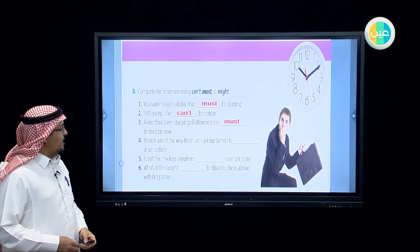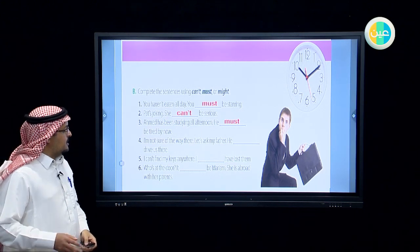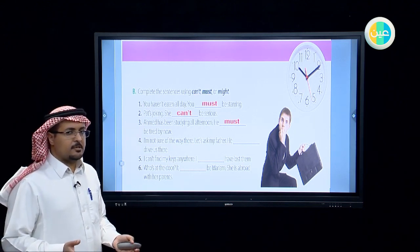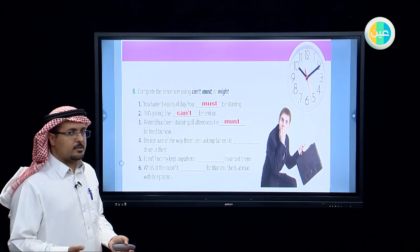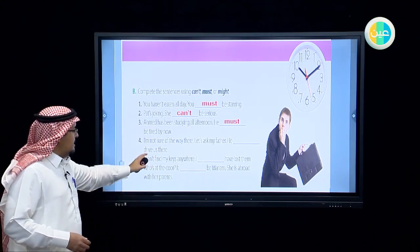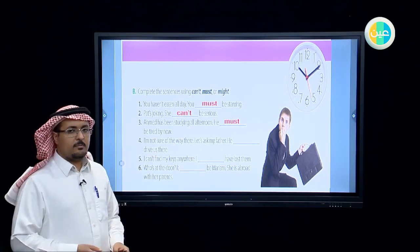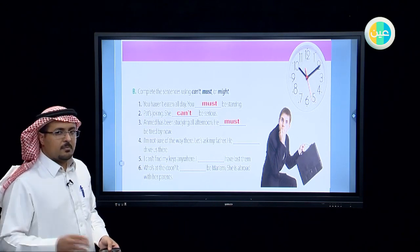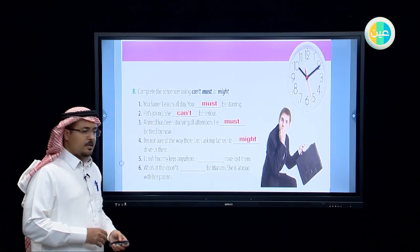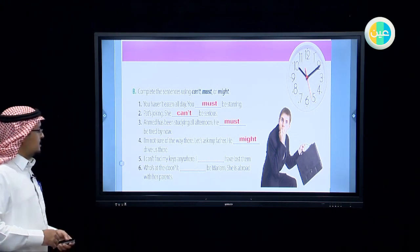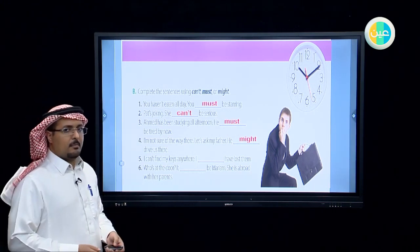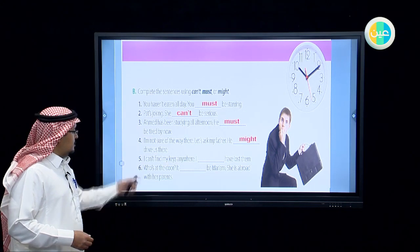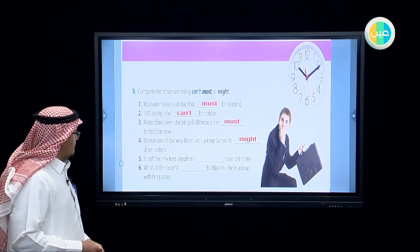Number four: I am not sure of the way there — let's ask my father. In this case you don't know the right directions and you want to ask your father to drive you there. It's a possibility, so we use: he might drive us there, because he might agree or accept to drive you.